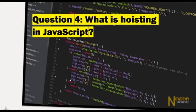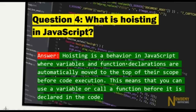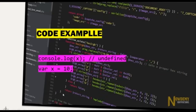Question number four: What is hoisting in JavaScript? Hoisting is a JavaScript behavior where variables and function declarations are automatically moved to the top of their scope before code execution. This means that you can use a variable or call a function before it is declared in the code.